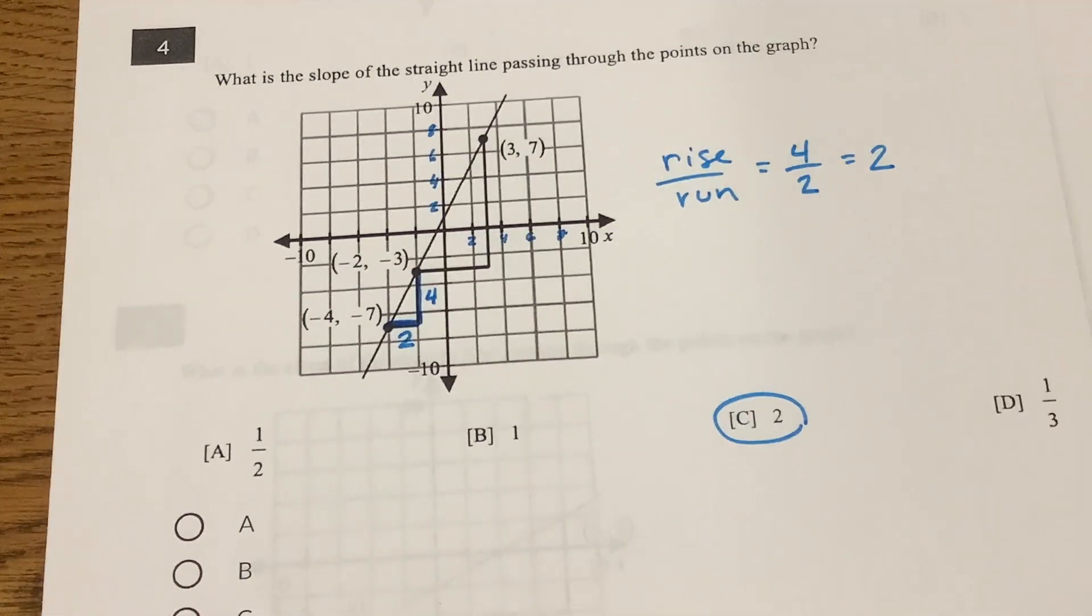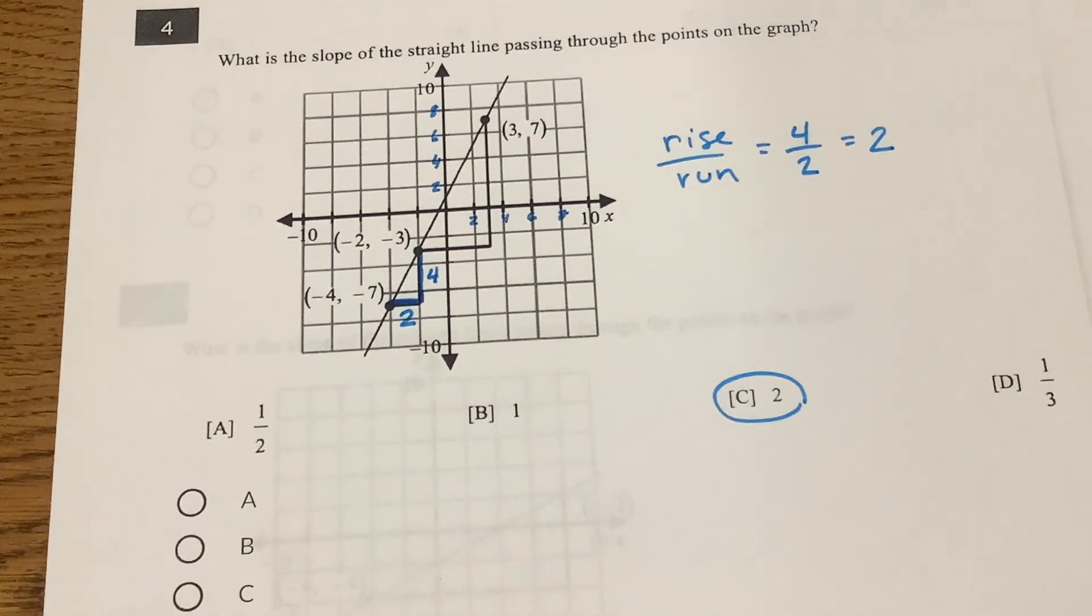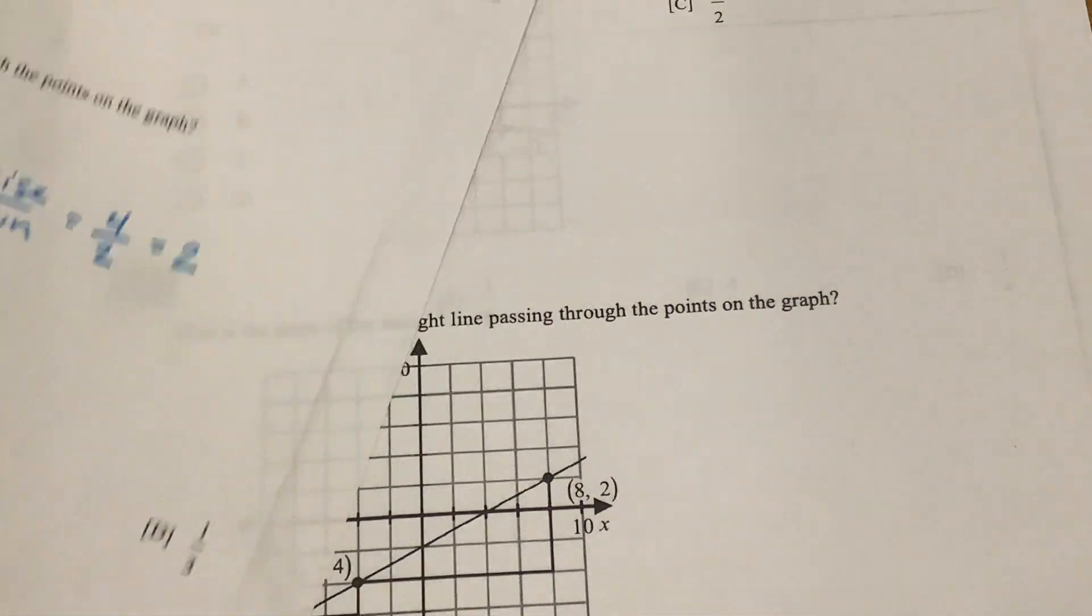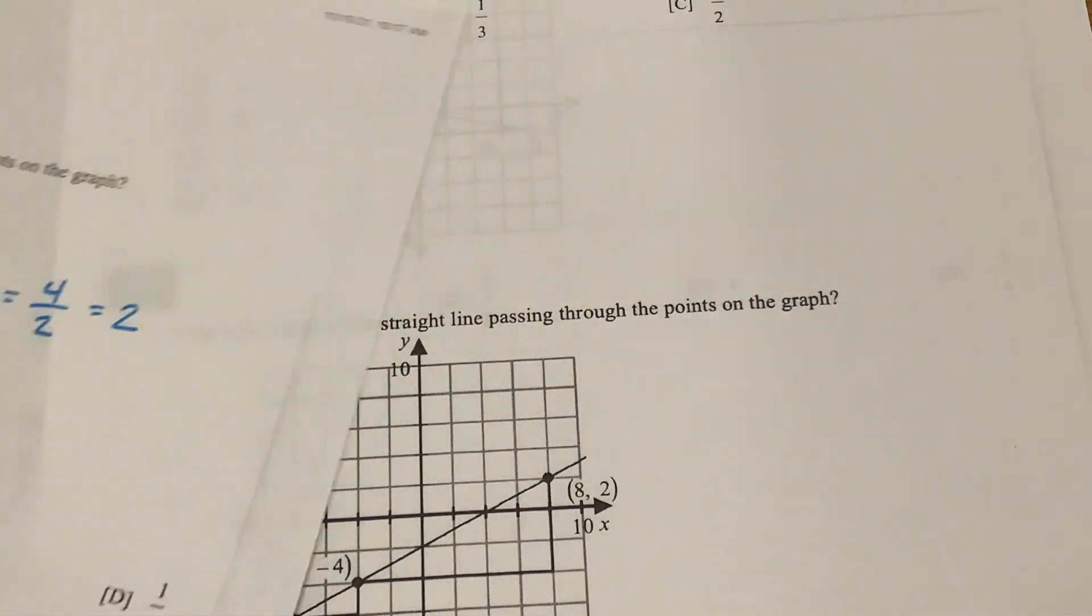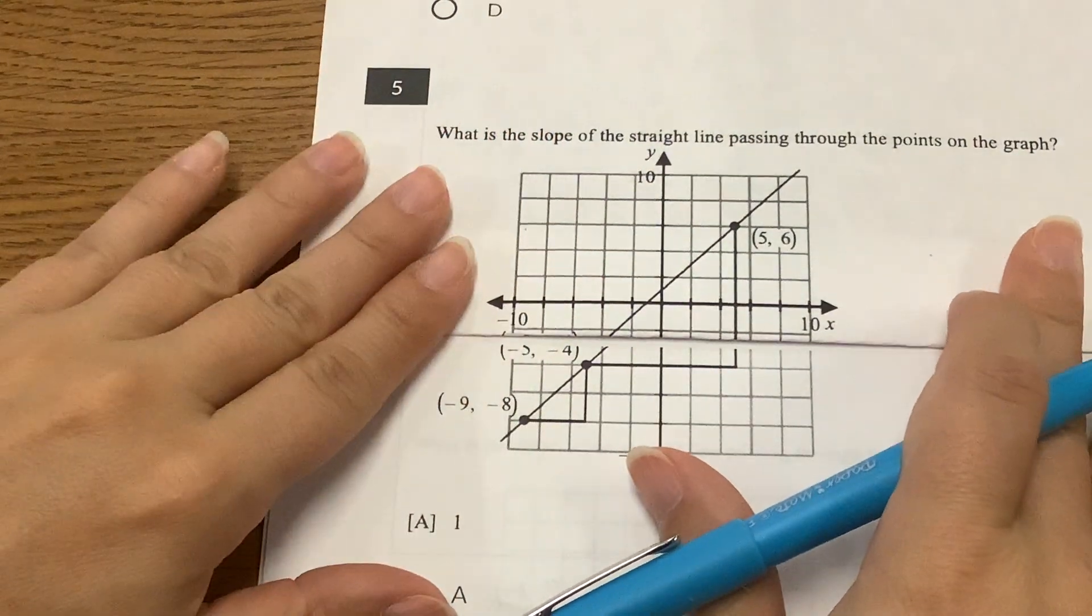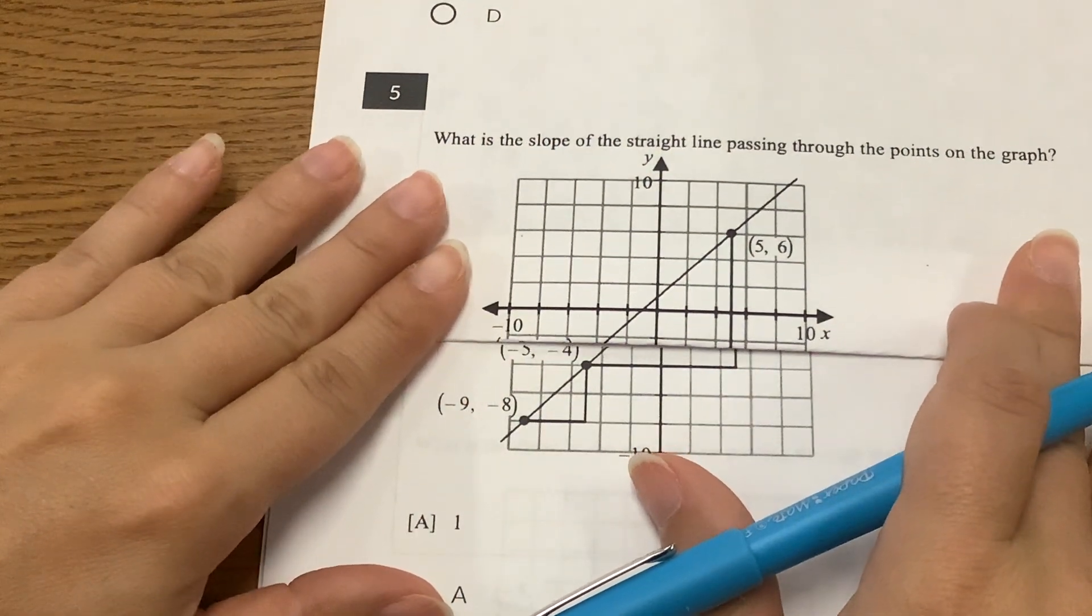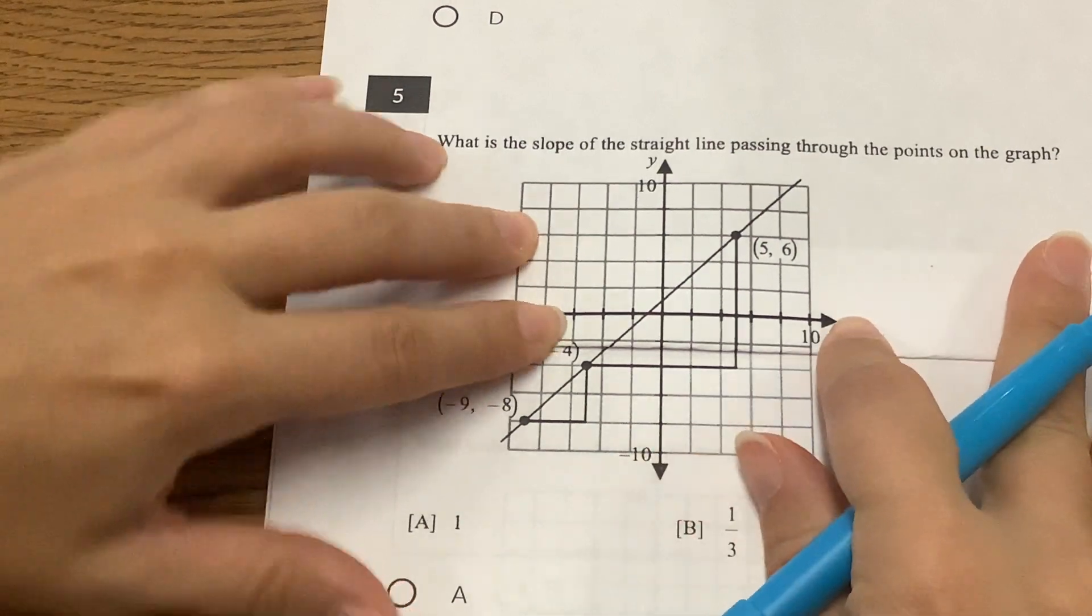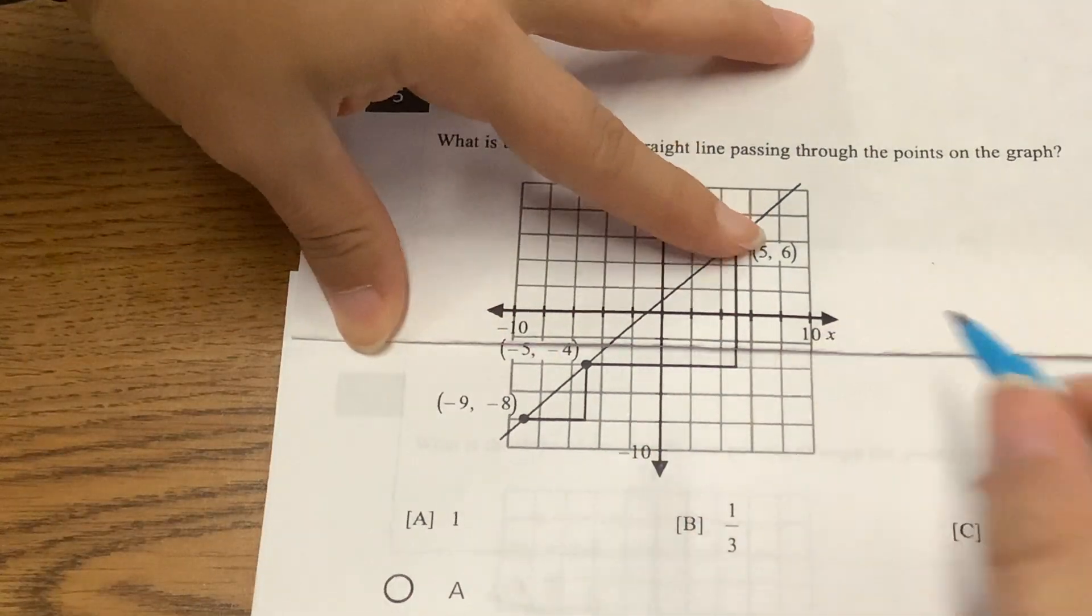For number 5, my graph is cut off. Okay, so if you look at number 5, sorry about my graph being cut off a little bit. But that works out. All right, so on number 5, we'll just look at this small triangle.